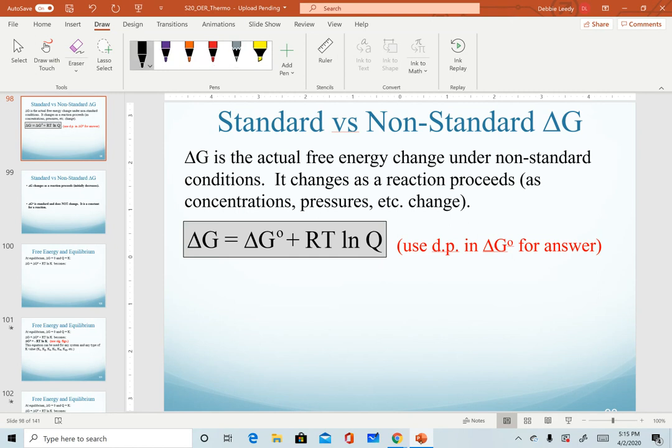Remember that delta G non-standard is the actual free energy change at any point in a reaction under non-standard conditions. Temperature, pressures, and concentrations can change, and so this value will change as a reaction proceeds, as we saw on our video in the graphs. We can use an equation that relates our non-standard delta G to our standard delta G value, and in this equation we use what I refer to as a correction factor.